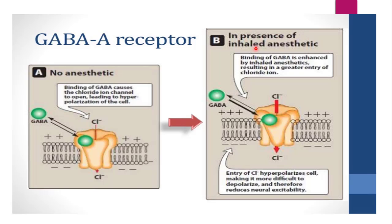In the presence of an inhaled anesthetic, it is potentiatory to GABA — that means it increases GABA action, or acts in coordination with GABA. So binding of GABA is enhanced when inhaled anesthetics are present, resulting in greater entry of chloride. You can see in the diagram the arrow is very narrow without anesthetic, and a broad arrow with anesthetic, indicating increased chloride entry. Since chloride entry increases, hyperpolarization of the membrane takes place, making it more difficult to depolarize the membrane, therefore reducing excitability. This is the simplest way by which inhaled anesthetics act — by potentiating GABA.